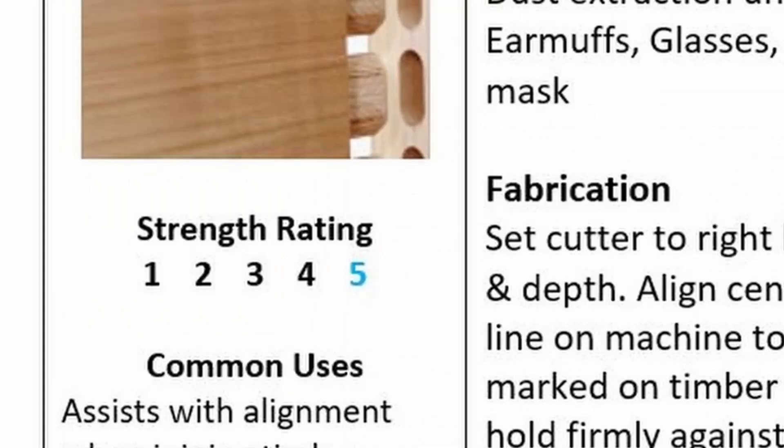The second aspect to comment on is the strength of the joinery technique. Not all joints are created equal, so from your understanding of joints, state how strong you believe this joint to be. For example, a butt joint would be a one, whereas a half lap joint would be a four, and a mortise and tenon would be a five.